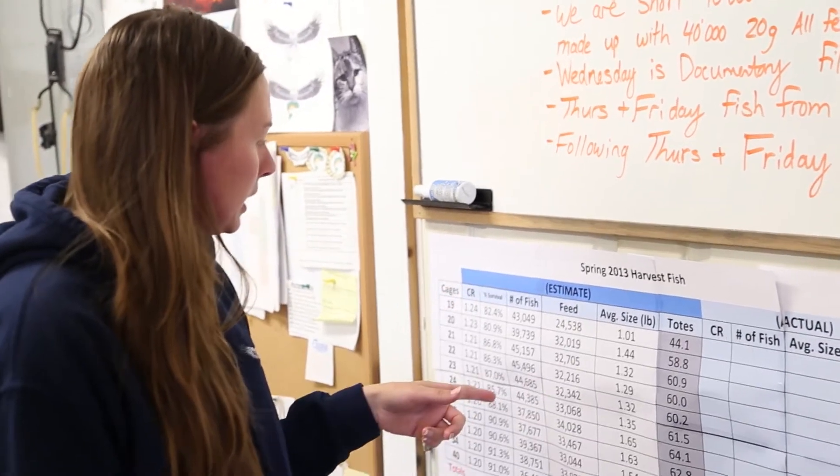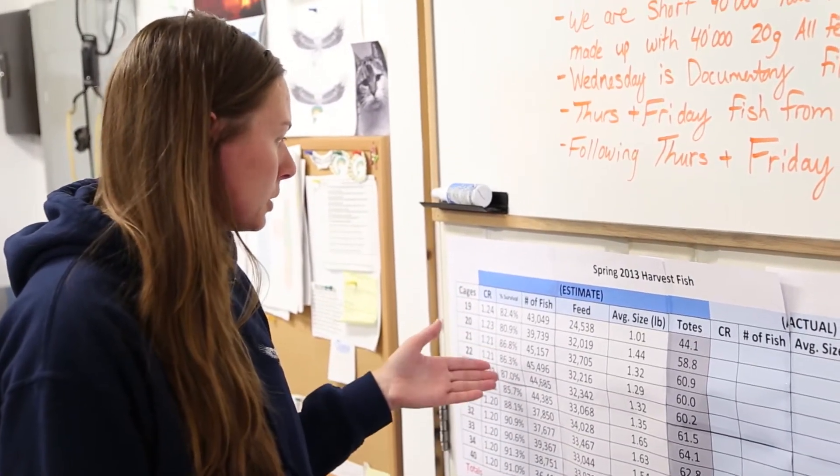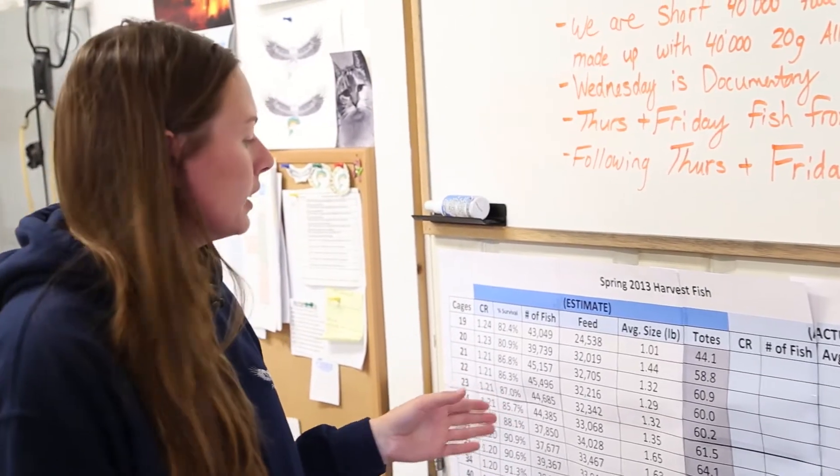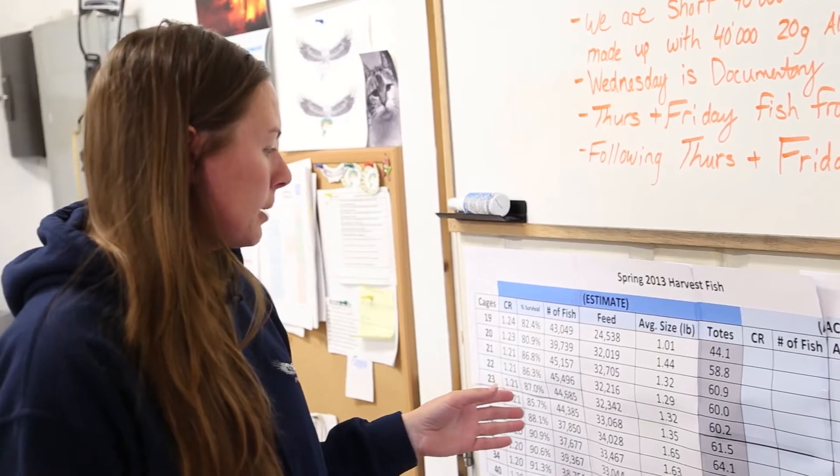We have an estimated number of fish which is based off of mortality, which relates back to the survival and how well they've been feeding. So it's a pretty accurate factor that we come up with.